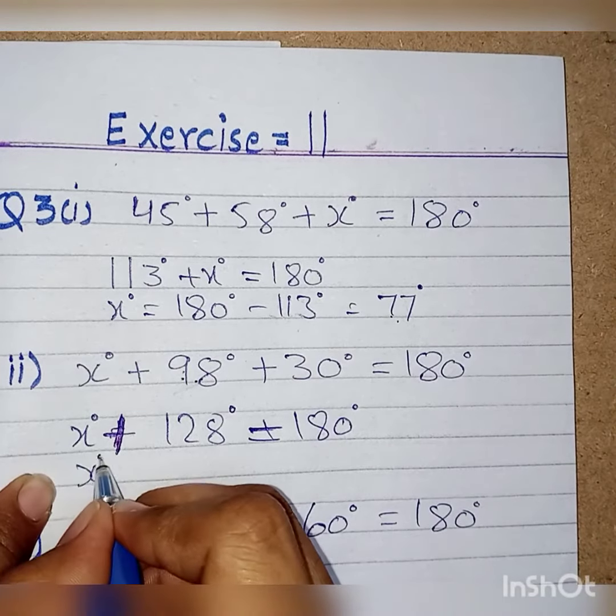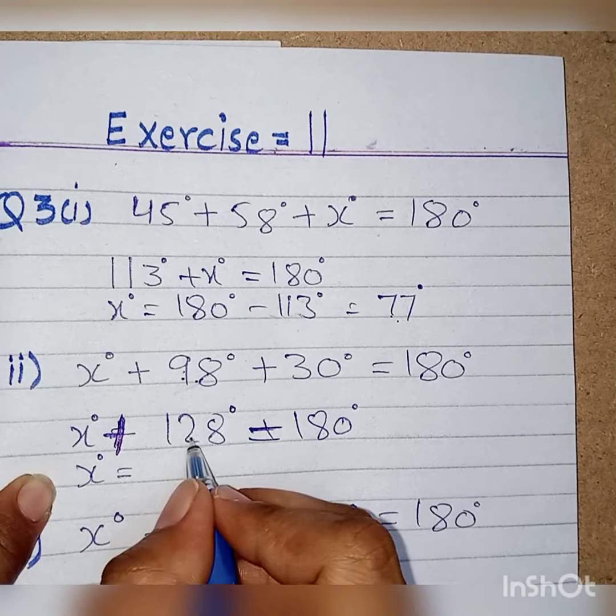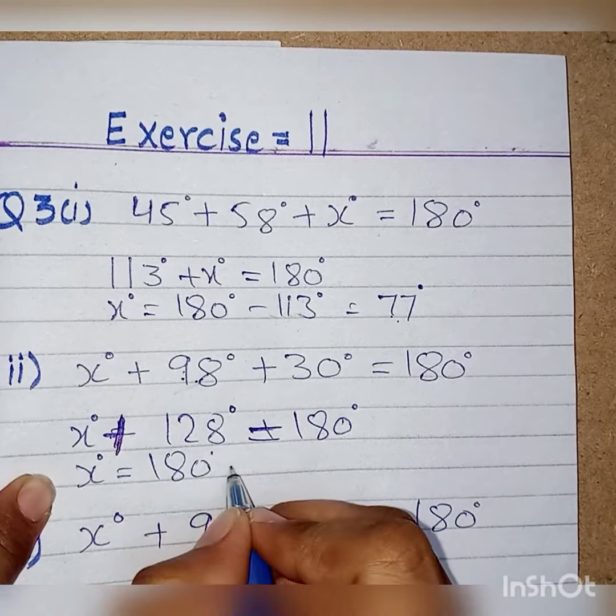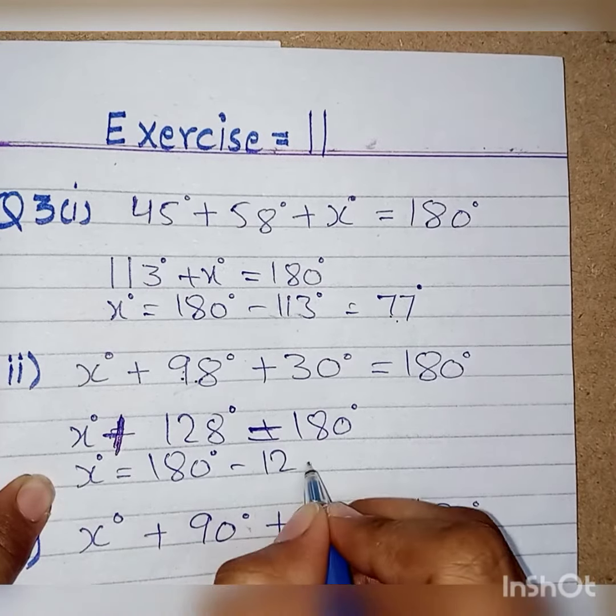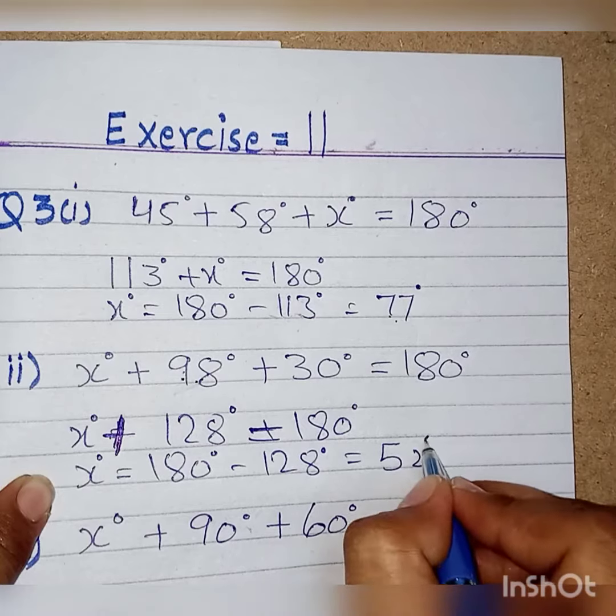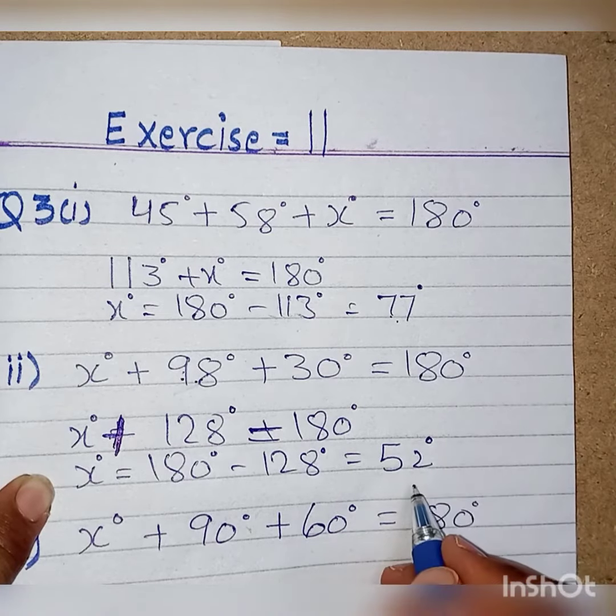We write x degrees here and 128 degrees, which was added, we will minus it from 180 degrees. When we minus 128 degrees from 180 degrees, then we will get 52 degrees. It means that x's measurement is 52 degrees.